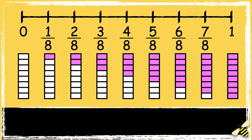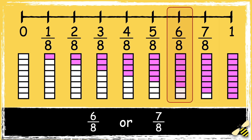Now we can use the number line to help us compare the fractions. Which fraction is greater, 6 eighths or 7 eighths? We can see that 6 eighths comes before 7 eighths on the number line. So 6 eighths is less than 7 eighths.